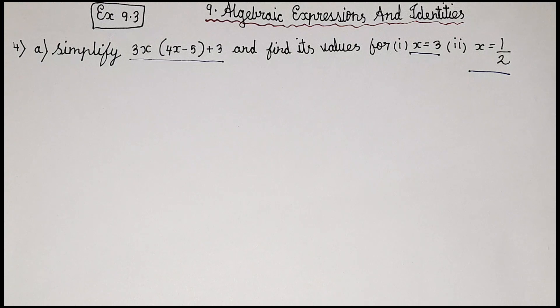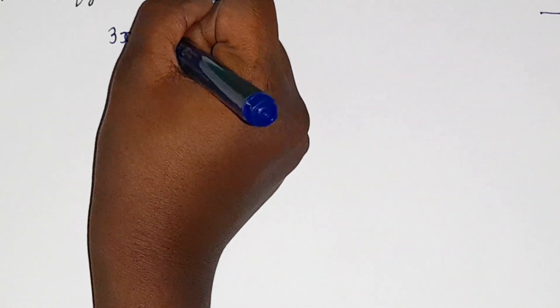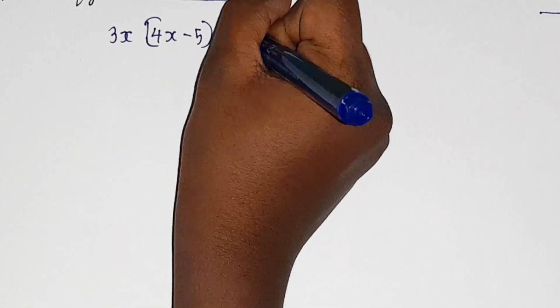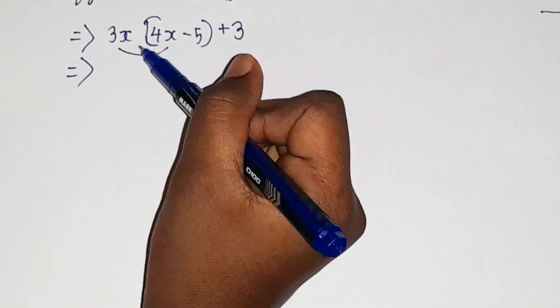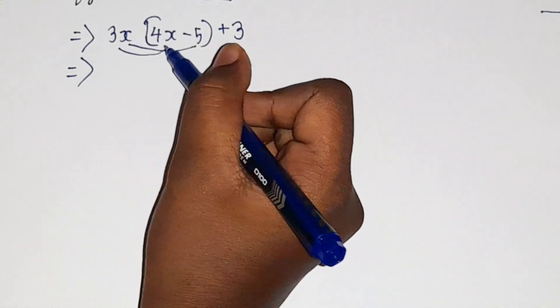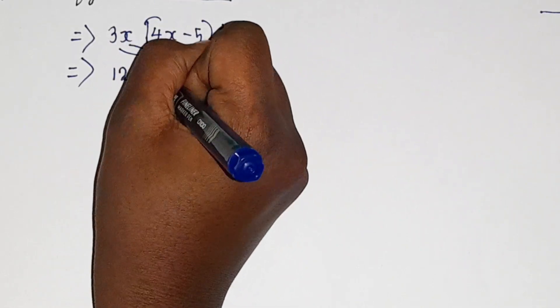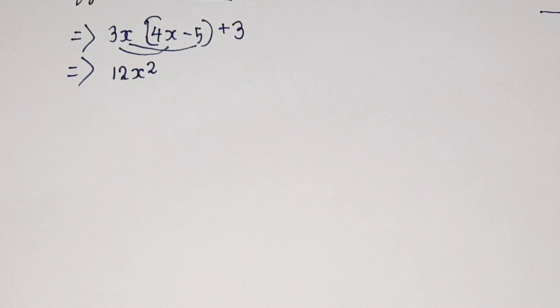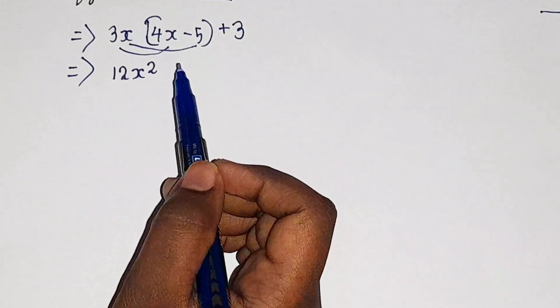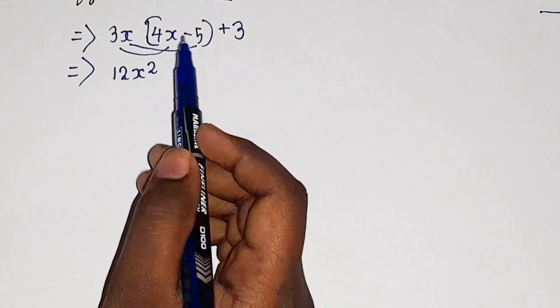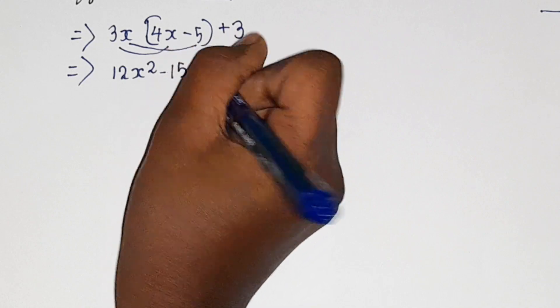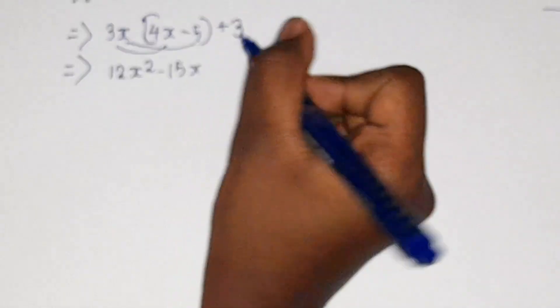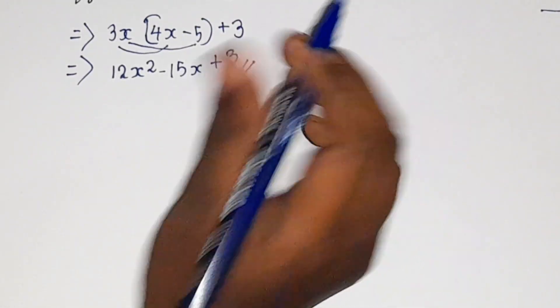So we will put x equal to 3 and solve it. First let's simplify: 3x into 4x minus 5 plus 3. We will multiply: 3x into 4x, and 3x into minus 5. So 3x into 4x is 12x squared, because 4 threes are 12 and x into x is x squared. Next, 3x into minus 5: 3 into 5 is 15, and plus into minus is minus, so minus 15x. The x is there, but here no x, so we write it as it is. Plus 3. Now we have simplified the expression.